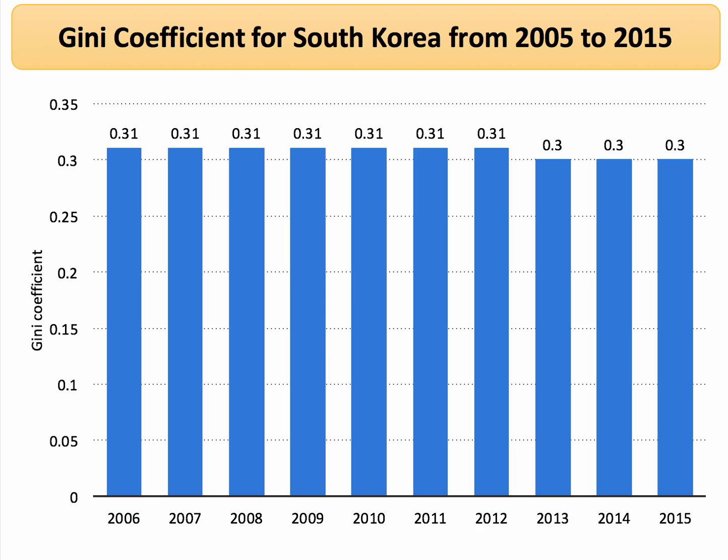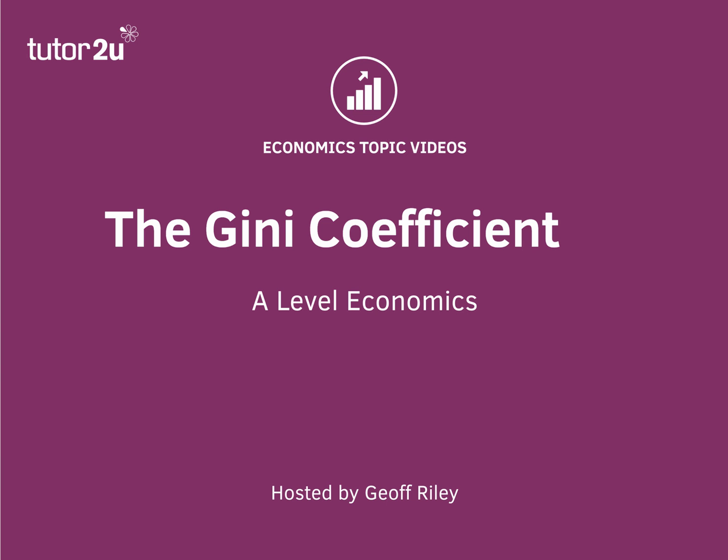A country where income inequality is both low and relatively stable is South Korea. Their Gini coefficient over the last 10 years or so has remained extremely stable at about 0.3 to 0.31. So South Korea actually has a Gini coefficient quite similar now to the United Kingdom, but much lower than the United States. So there we go — a quick overview of the Gini coefficient.